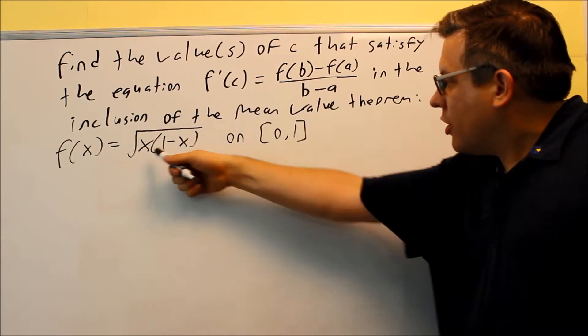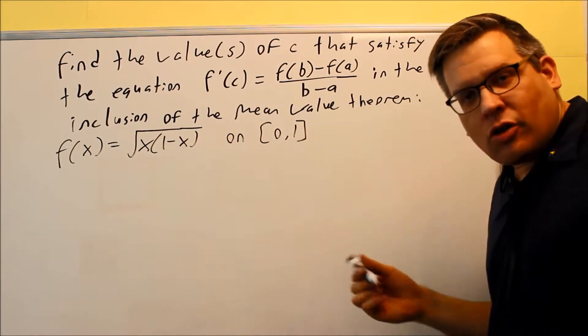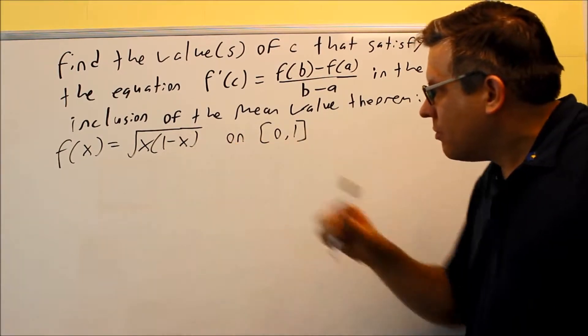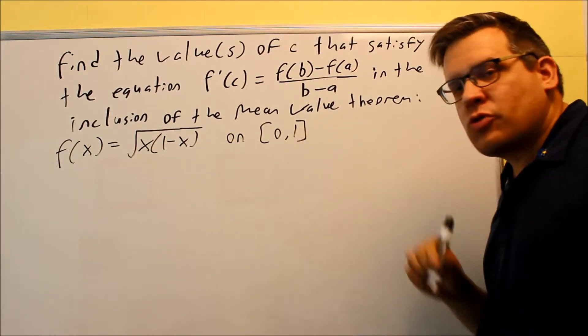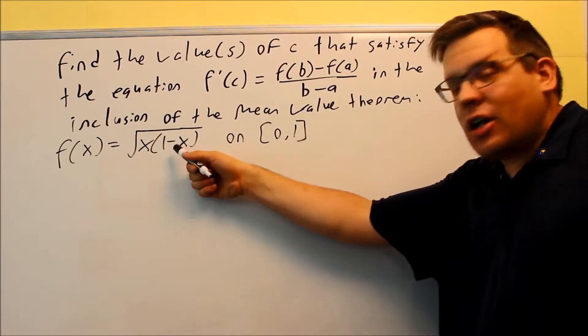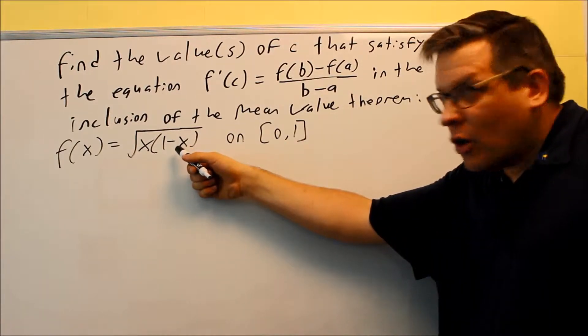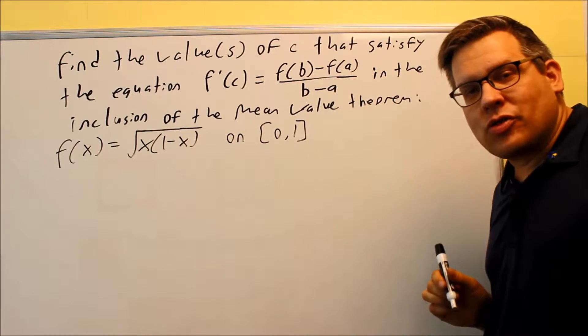So if I put 0 in here, I get square root of 0, which is 0, that's okay. If I put 1 in there, I get a 0. The square root of 0 is okay as well. Anything in between 0 and 1 would not give me any negative numbers underneath, which means that we know it's definitely continuous on that closed interval.